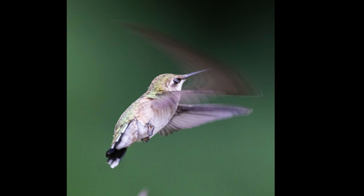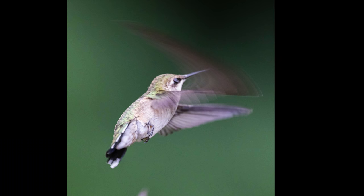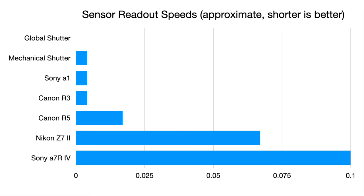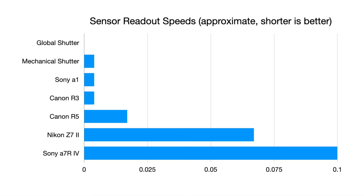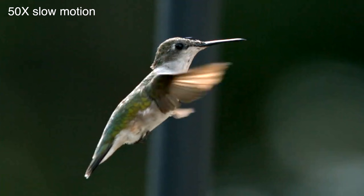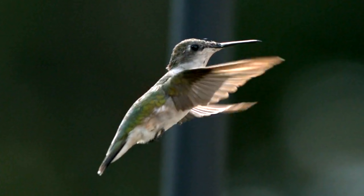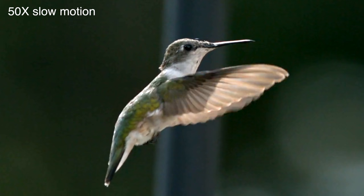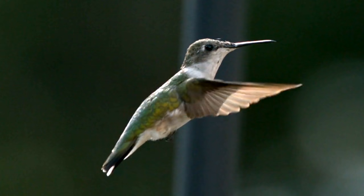The very popular Canon R5 that Chelsea used to take that hummingbird picture with has an electronic shutter readout speed of about 1/60th of a second. The Nikon Z7 Mark II has a much longer readout speed of about 1/15th of a second. The Sony a7R IV with its 60 megapixels is processing so much data that it takes about 1/10th of a second. This ruby-throated hummingbird flaps her wings about 50 times a second. Let's photograph her with an electronic shutter that has a readout speed of about 1/30th of a second — the body looks okay, but the fast-moving wings are completely distorted.